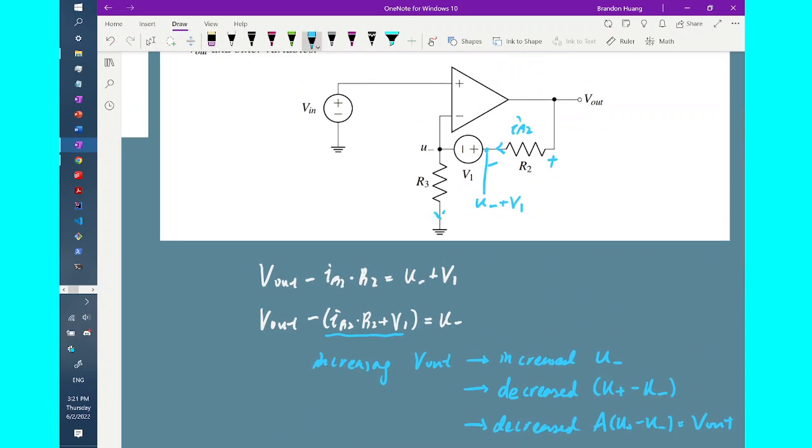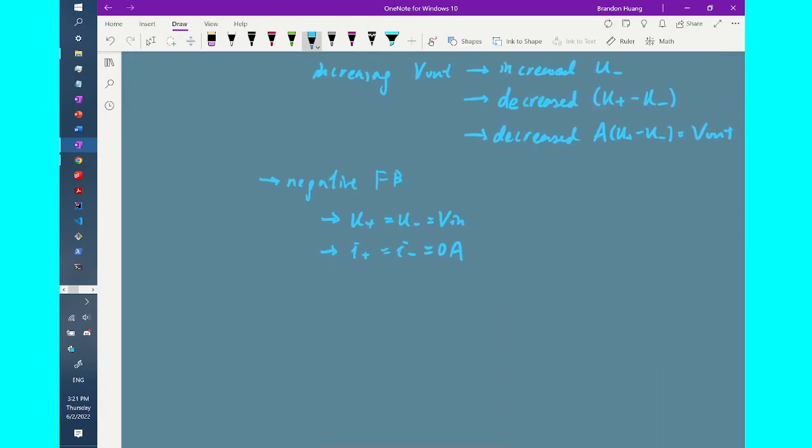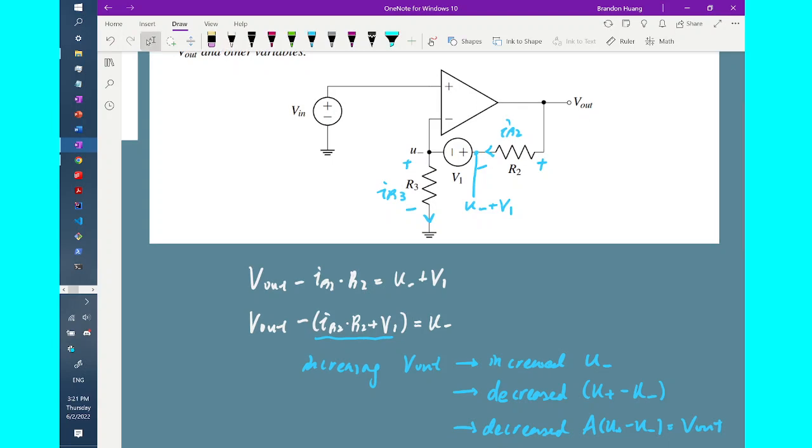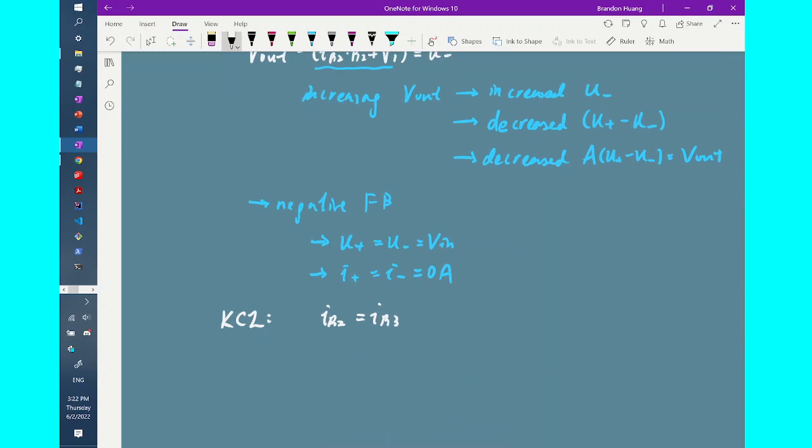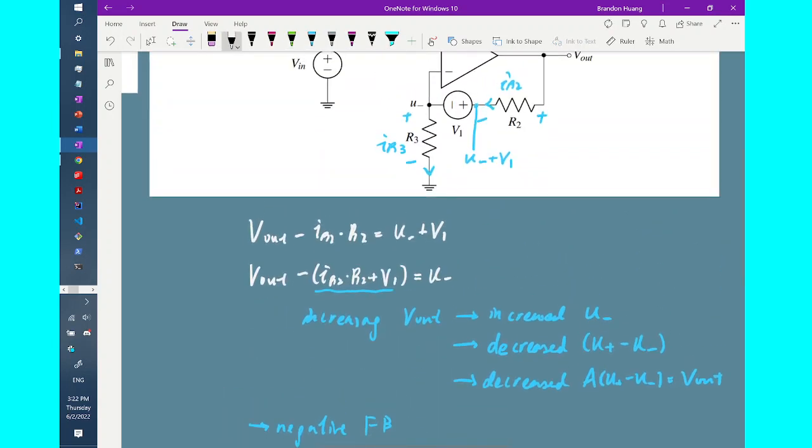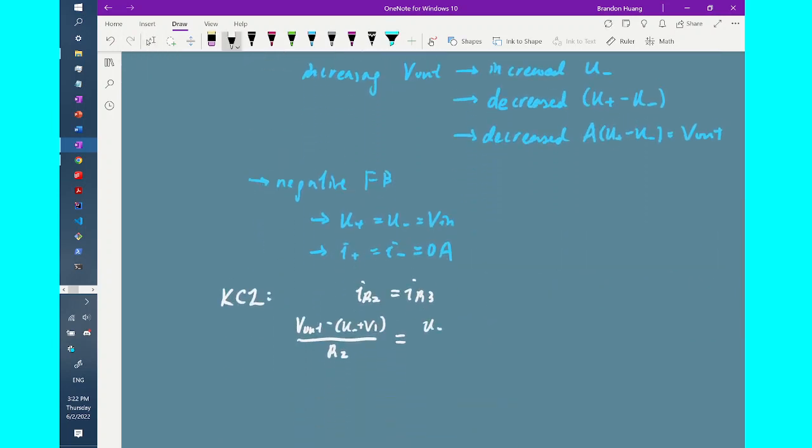So here I have another current that is equal to i_R3, flowing from the up to the down. And I know that i_R2 must be equal to i_R3 using Kirchhoff's current law. So what this tells me is that since KCL is telling me i_R2 is equal to i_R3, I can also write i_R2 and i_R3 in terms of known circuit quantities. So for example, i_R2 will be equal to V_out minus U_- plus V_1 over R2, which will then be set equal to i_R3, and i_R3 is simply U_- minus the ground node over R3 using Ohm's law. So I'll just write it as U_- over R3.